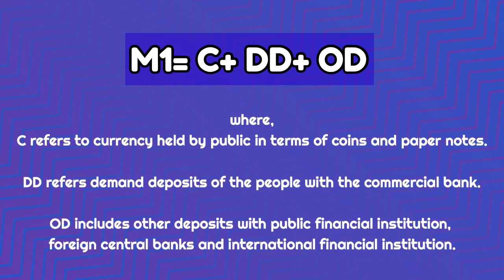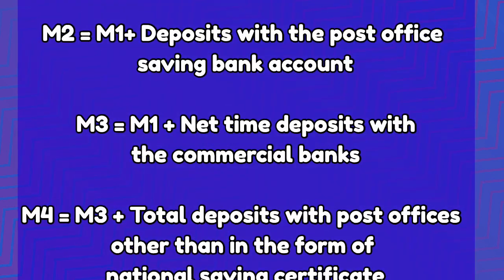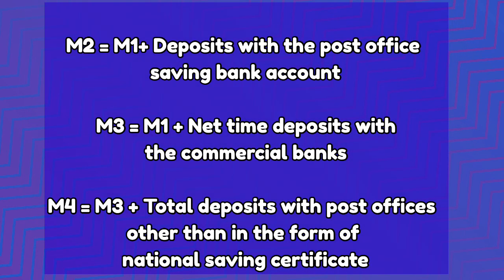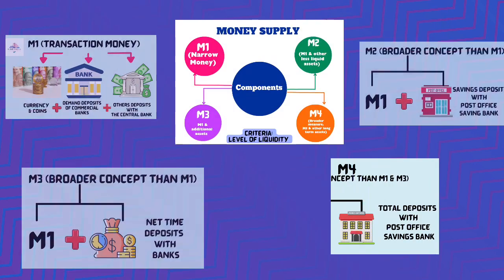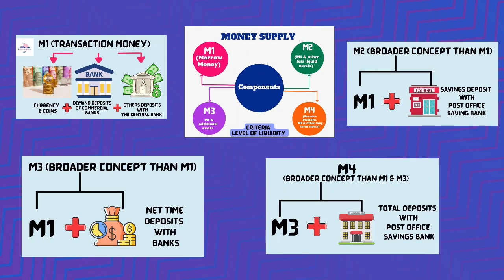Now let us convert these infographics into equation form. M1 = C + DD + OD, where C refers to currency held by the public in coins and paper notes, DD refers to demand deposits of the public with commercial banks, and OD includes other deposits with public financial institutions, foreign central banks, and international financial institutions. M2 = M1 + deposits with post office savings bank. M3 = M1 + net time deposits with commercial banks. M4 = M3 + total deposits with post office savings bank, excluding national savings certificates. You can take screenshots of the infographics for future reference and quick revision.